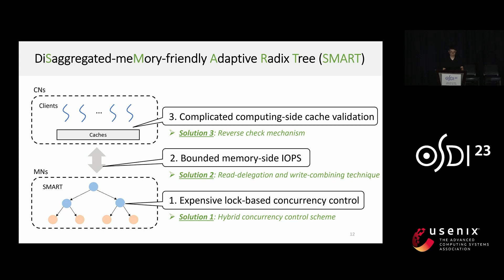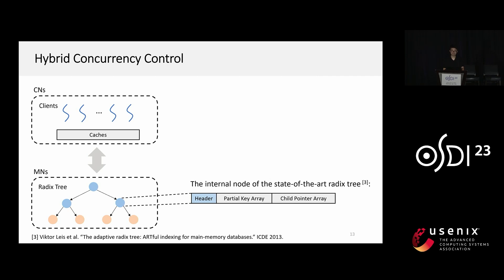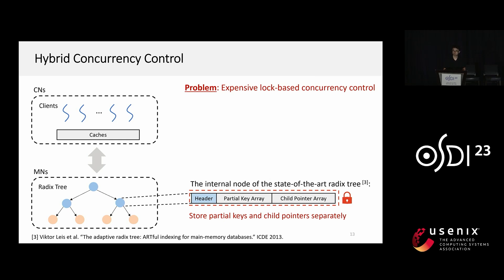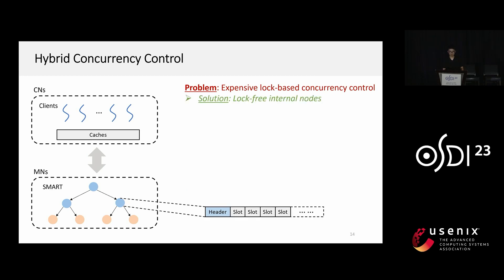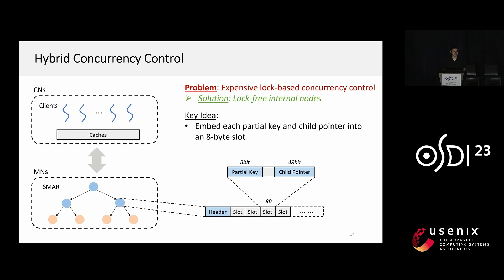We propose SMART, a disaggregated memory-friendly adaptive radix tree, including a hybrid concurrency control, a redelegation and write combining technique, and a reverse track mechanism. The first design is the hybrid concurrency control. The current state-of-the-art radix tree stores partial keys and child pointers separately, requiring locking the entire node to modify each partial key and its corresponding pointer atomically. SMART proposes a lock-free internal node design by embedding each partial key and its corresponding pointer into an 8-byte slot, which can be modified atomically via the RDMA compare-and-swap operation. The header size is also fixed to 8 bytes, enabling atomic modification.